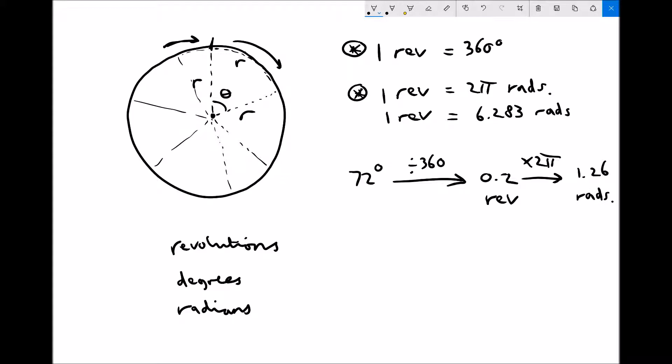If we look at this a slightly different way, let's take another angle, this time we'll take 135 degrees. We can actually combine those two conversion factors. So what we would actually be doing is we'd be timesing by 2 pi over 360, which is the same as dividing by 360 and timesing by 2 pi, and that would again give us our angle in radians, this time 2.36 rads.